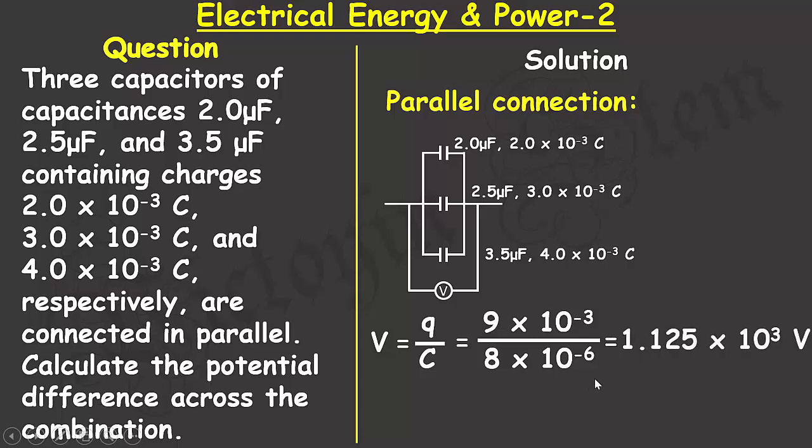If I divide this value, it boils down to 1.125 times 10 to the power of 3 volts, which is equivalent to 1.125 kilovolts.